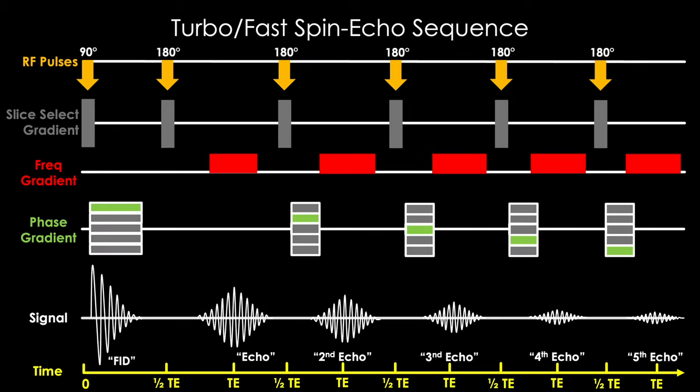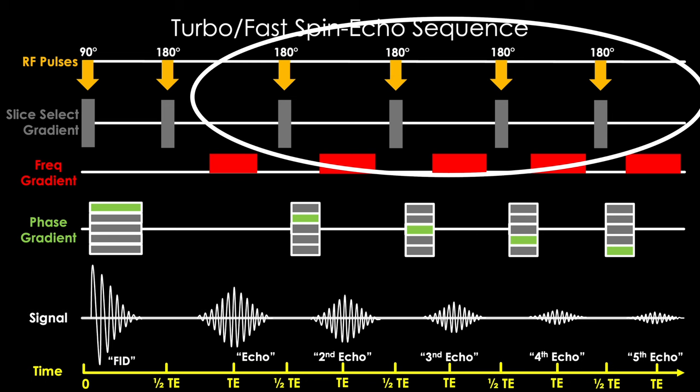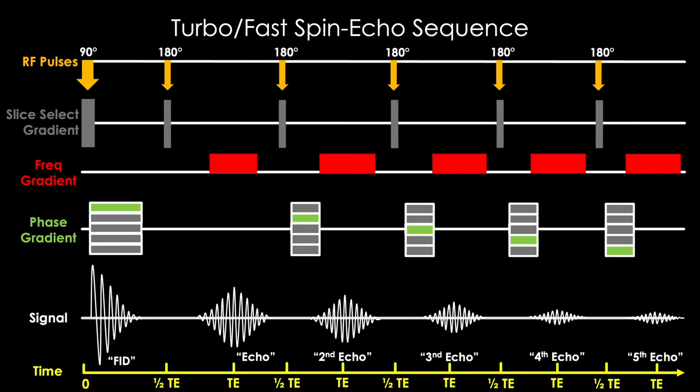So the first hurdle to clear is time. The longer this sequence goes on, the more and more disordered and irreversible dephasing our spins accumulate, accounting for why each progressive echo is smaller until the signal dies out. So we'll need to shorten whatever we can, starting with these 180 degree pulses.